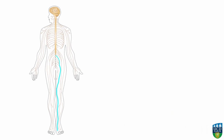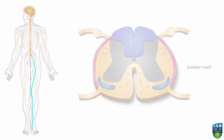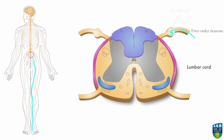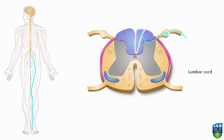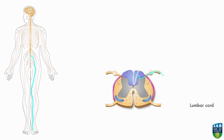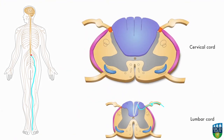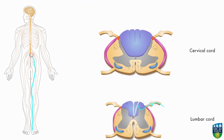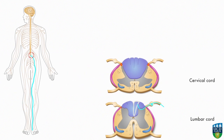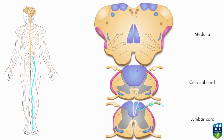The impulse is carried by the first order neuron into the spinal cord via the dorsal root, where it then enters fasciculus gracilis. The first order neuron continues to carry the impulse up through the spinal cord in the fasciculus gracilis.